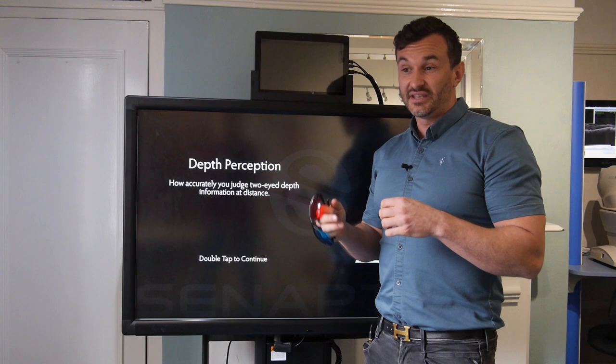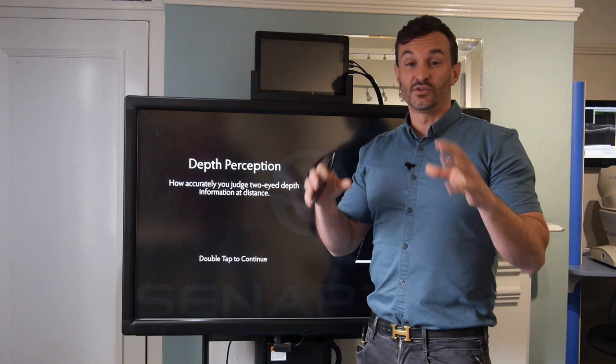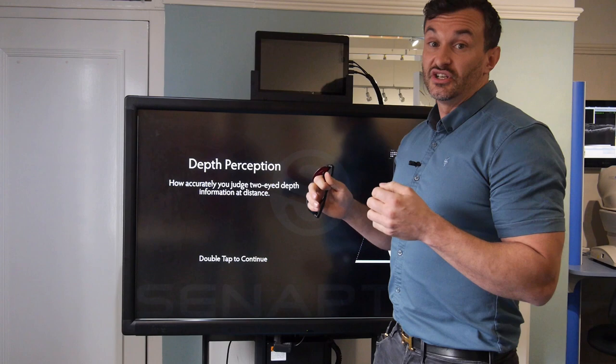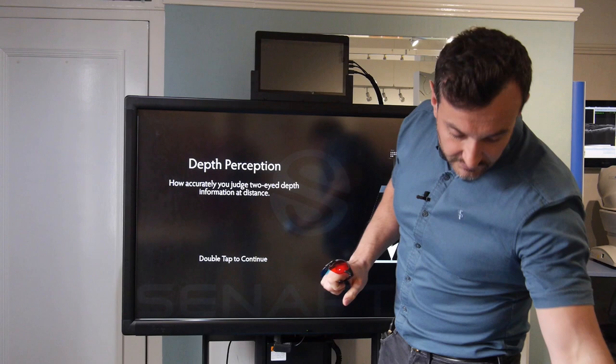Okay, so now we're going to have a look at a two-eye visual skill. This is called depth perception. This is a measurement of how well the two eyes work as a unit, often called stereopsis. Depth perception is really important for judging where we are relative to our opponents, relative to terrain changes, all that sort of stuff.